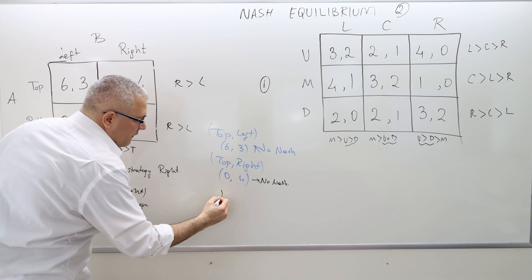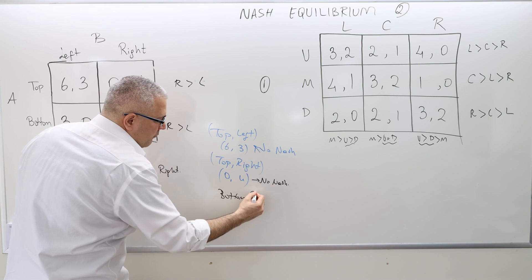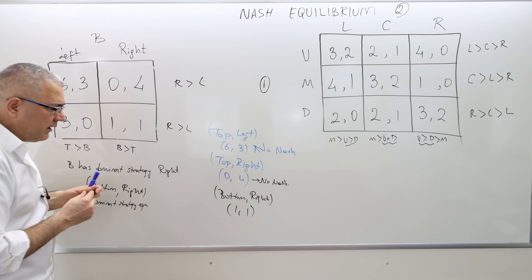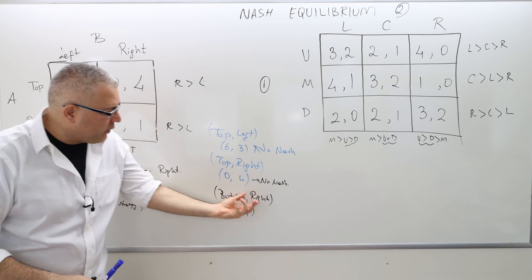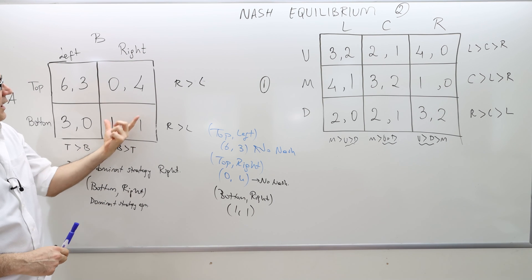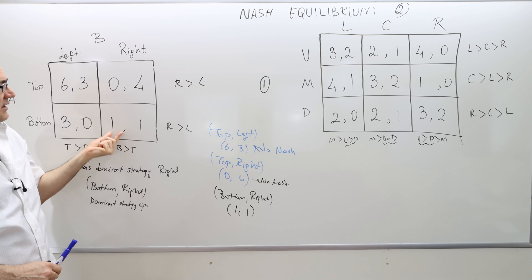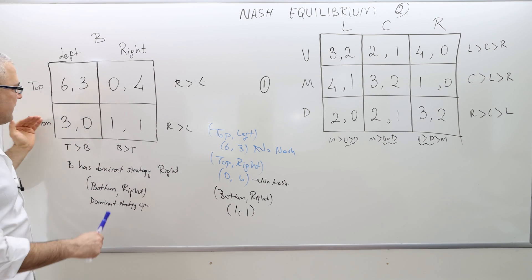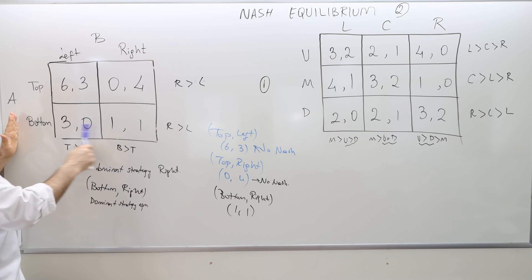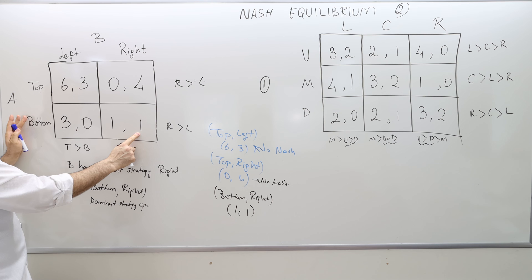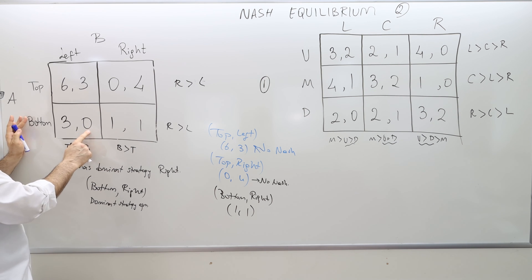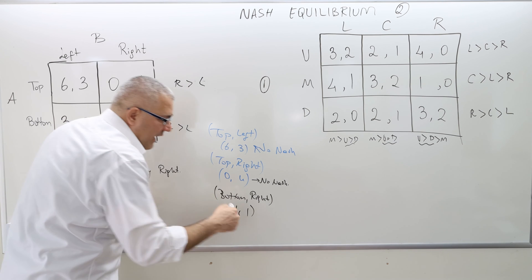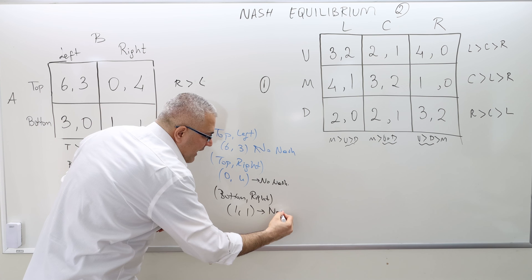What about bottom-right? With the payoffs 1 and 1, player A would say: if I knew my opponent was playing right, I would certainly choose bottom because rather than 0 I'd prefer to get 1. So player A is not going to regret. Player B would say: given that player A chose bottom, the best thing for me is to play right rather than left because 1 is higher than 0. So neither player A nor player B regrets. Hence that's the no-regret outcome, and hence this is a Nash equilibrium.